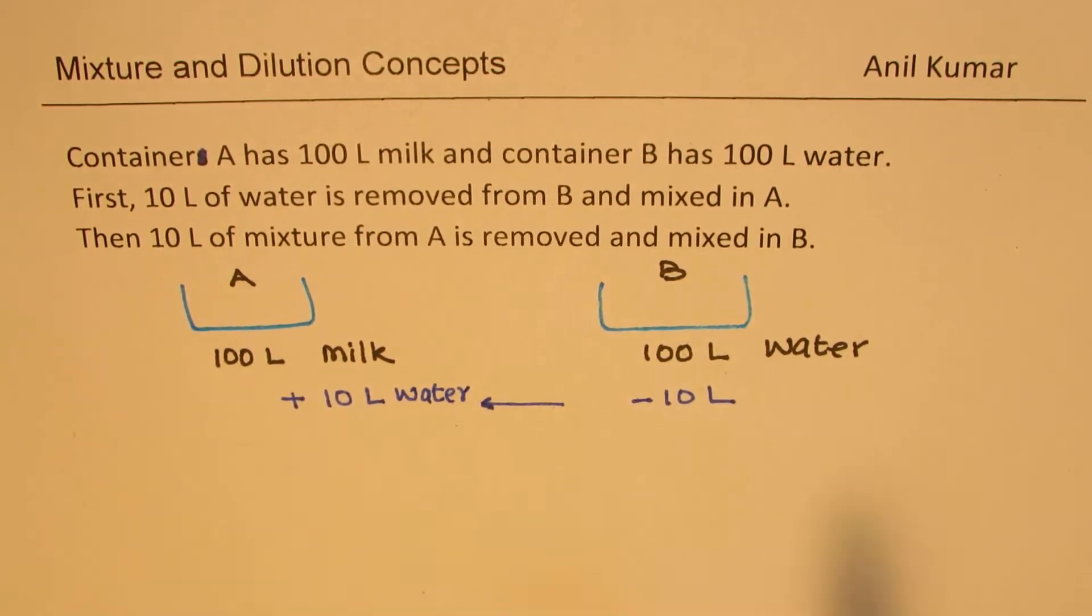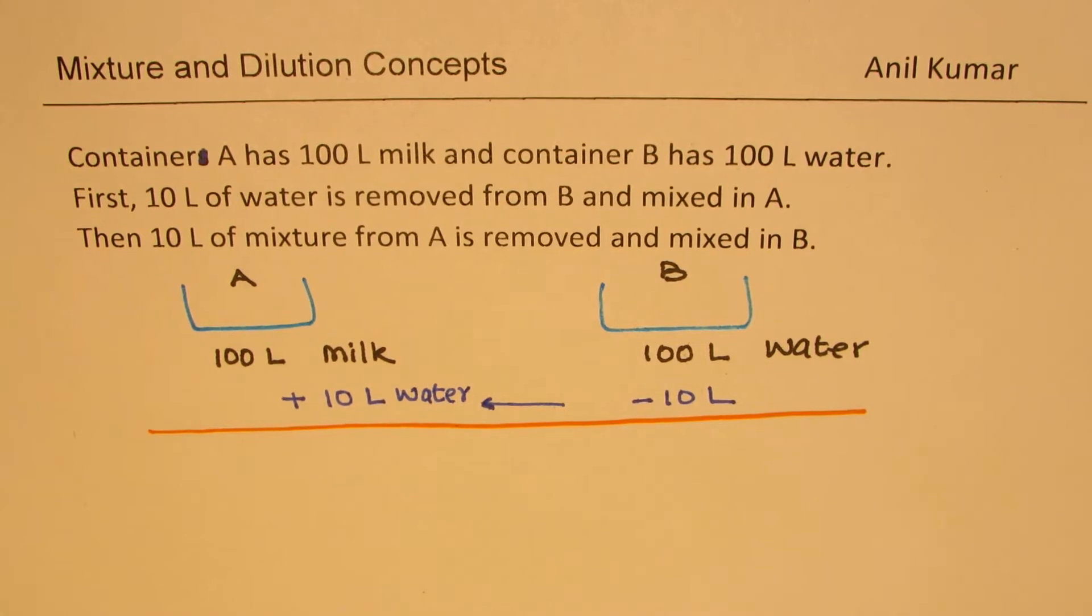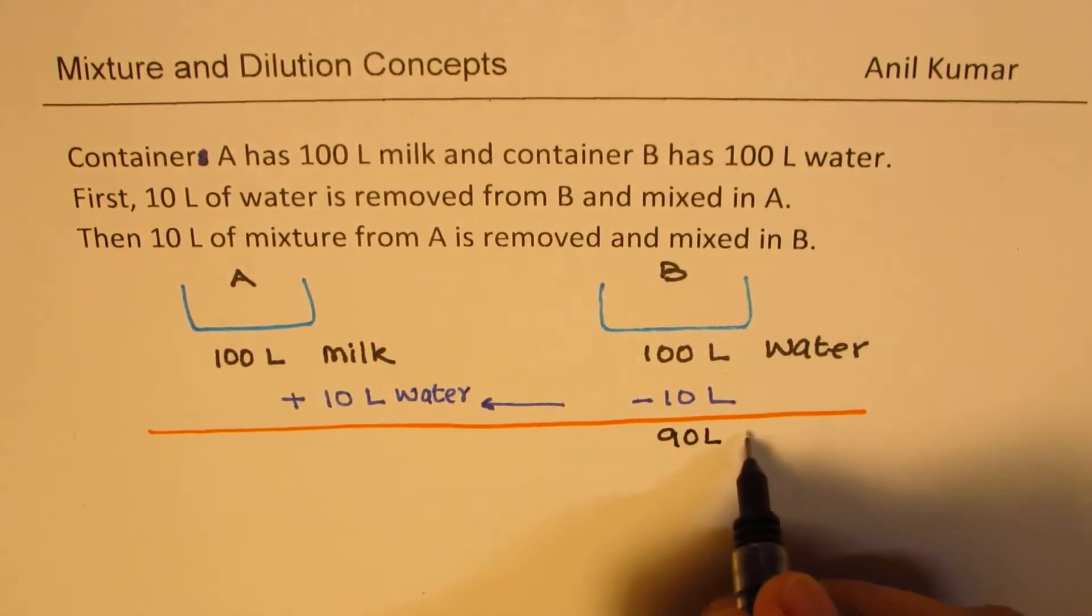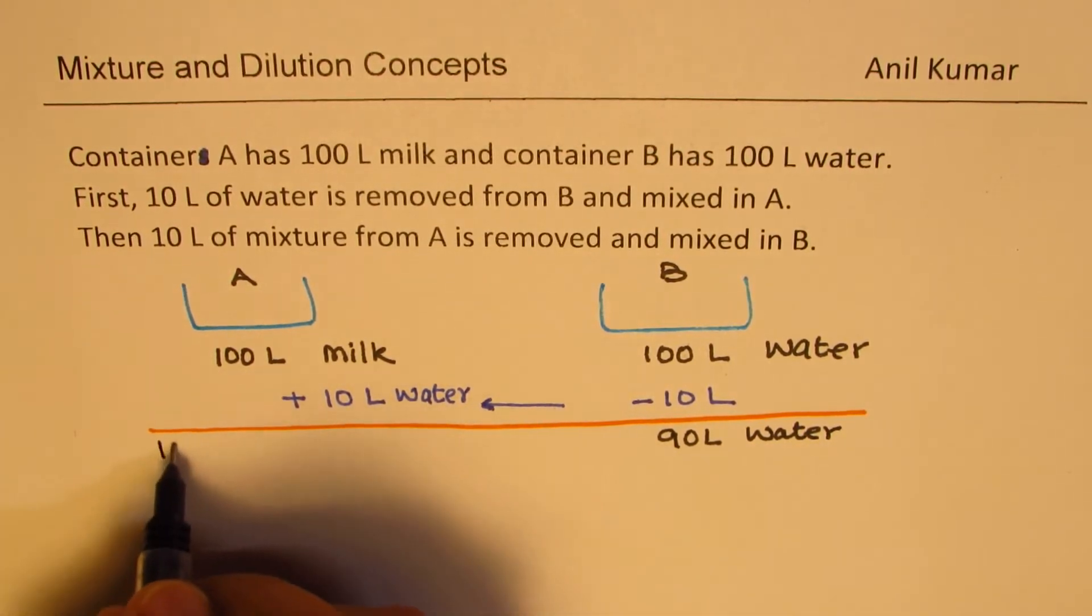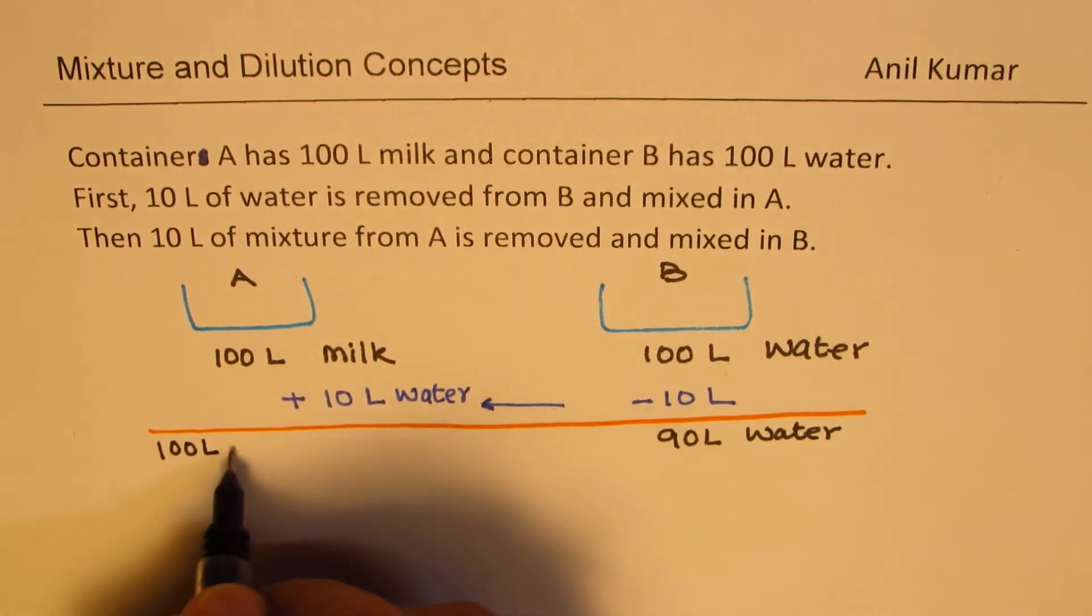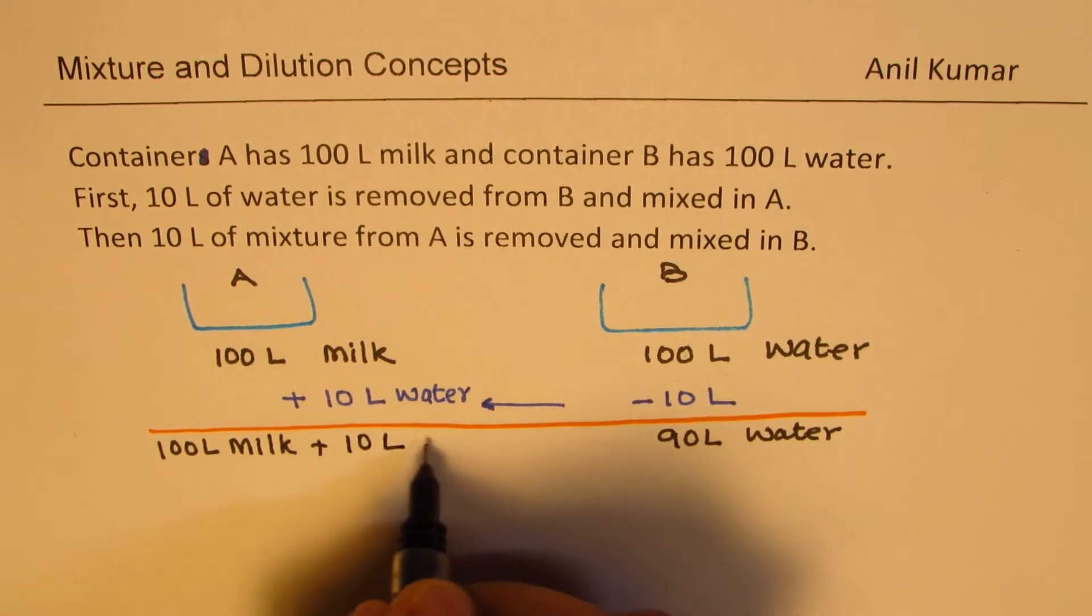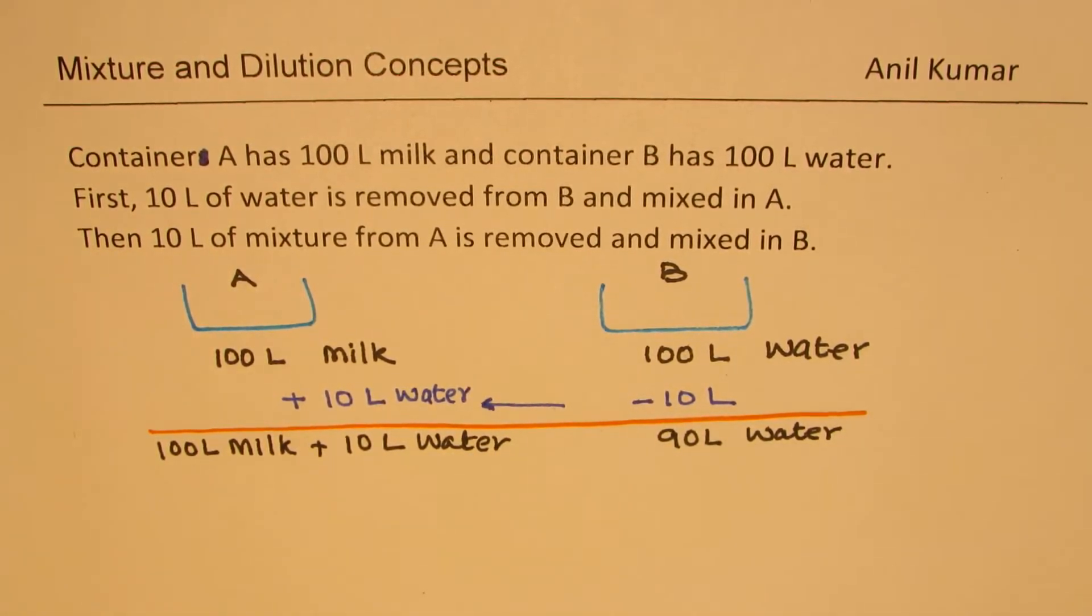So at this stage the situation is kind of like what? At this stage we have 90 litres of water in B. Here we have 110 litres, 100 litres of milk plus 10 litres of water. So that is the situation at present.